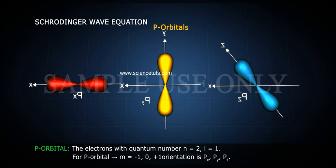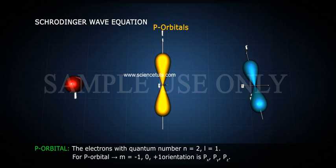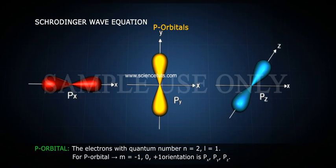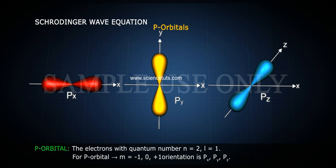P orbital. The electrons with quantum numbers n = 2, l = 1 correspond to P orbital. For P orbital, m = -1, 0, +1, giving three orientations designated as px, py, and pz.